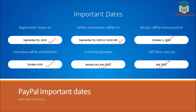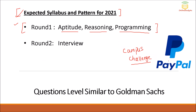Full-time starts July 2021. Round 1 will consist of aptitude, reasoning, and programming — I will be talking about the detailed syllabus as well. These exams will be conducted on HackerRank.